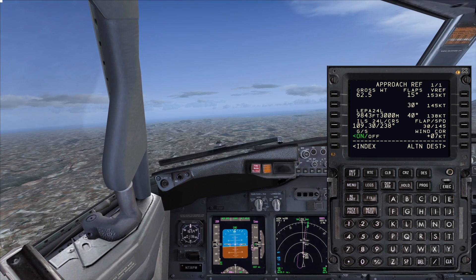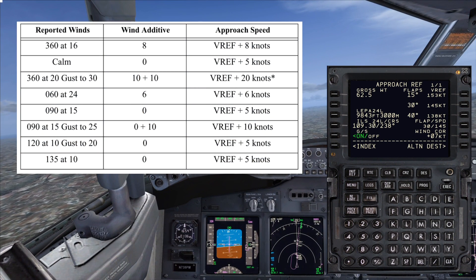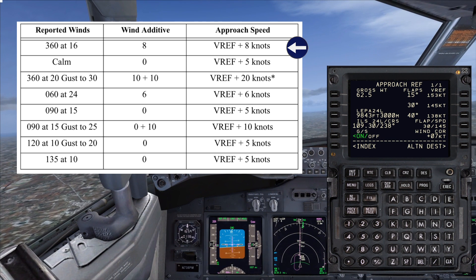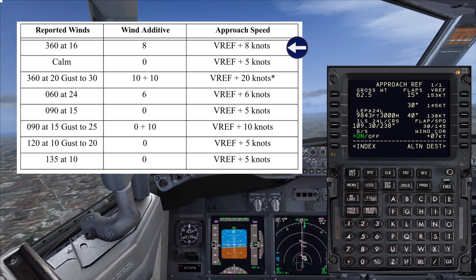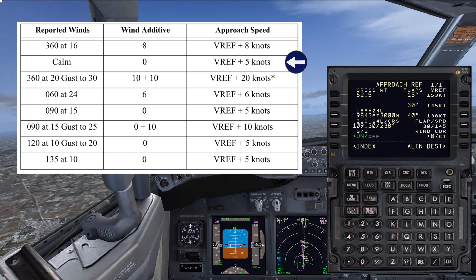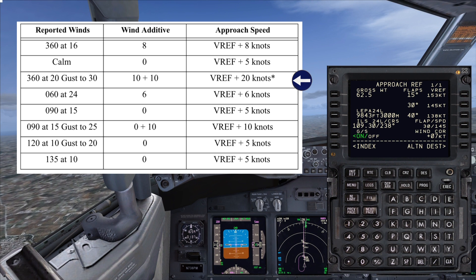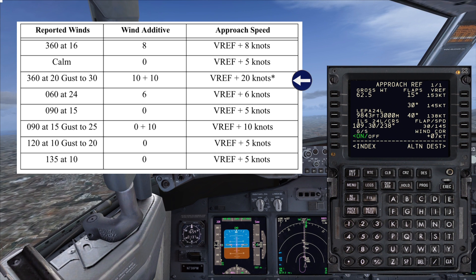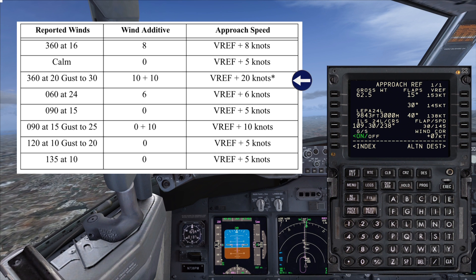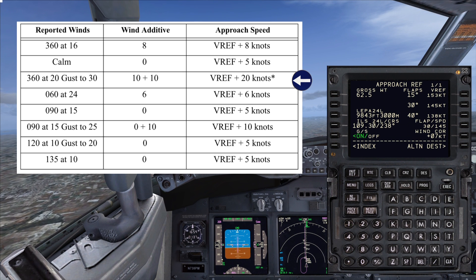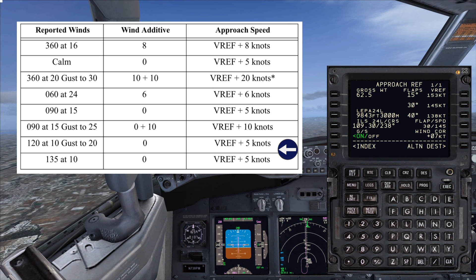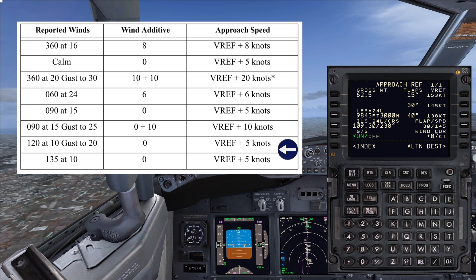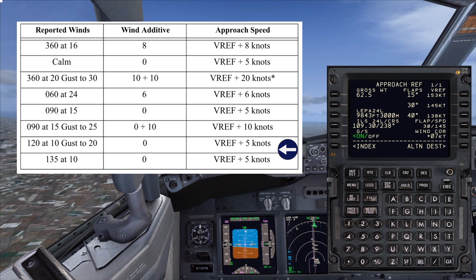Now I'll bring up a table from the flight crew training manual which gives some examples. This is based on a generic runway, Runway 36. At the top you can see 360 at 16 knots — half of that is 8, so the approach speed would be VREF plus 8. If the wind is calm, you apply the minimum correction of plus 5 knots. In gusty conditions, you take half your steady wind component — so 360 at 20 gives 10 — plus the full gust increment of 10 knots, so you'd fly VREF plus 20, which is the maximum approach speed. For the bottom two examples — 120 at 10 and 135 at 10 — those are both tailwinds, so you fly the minimum approach speed of VREF plus 5 knots.